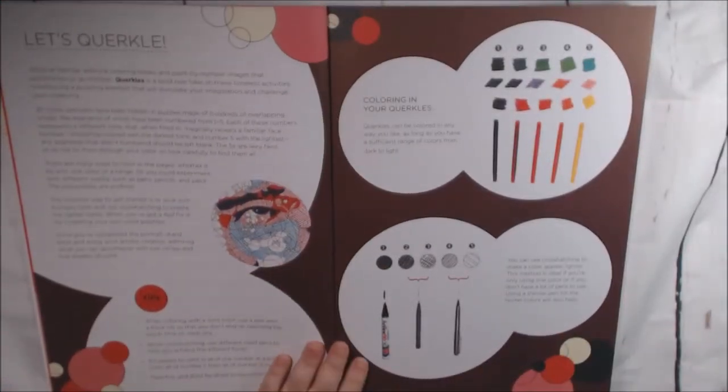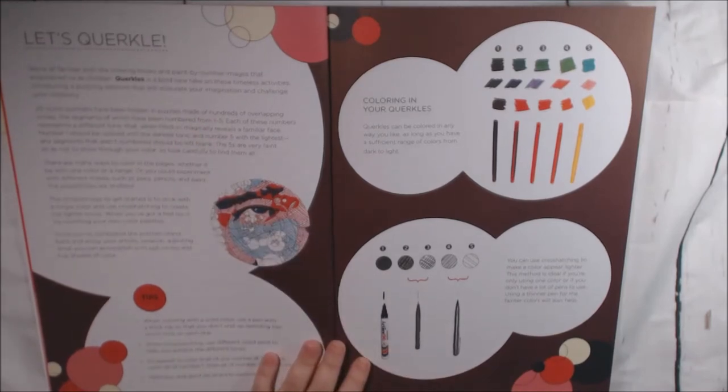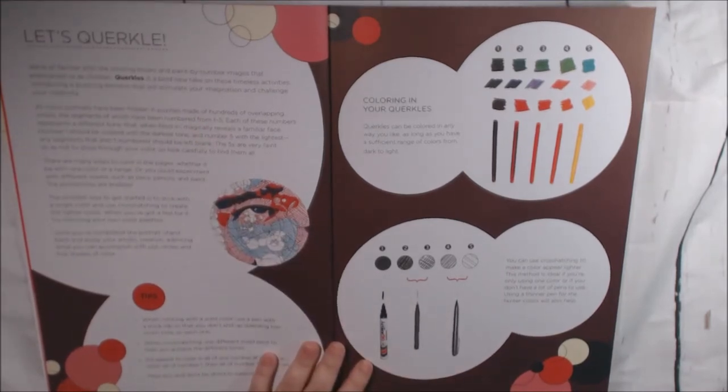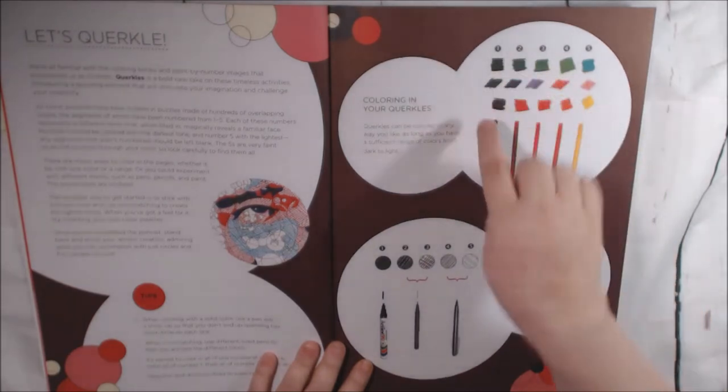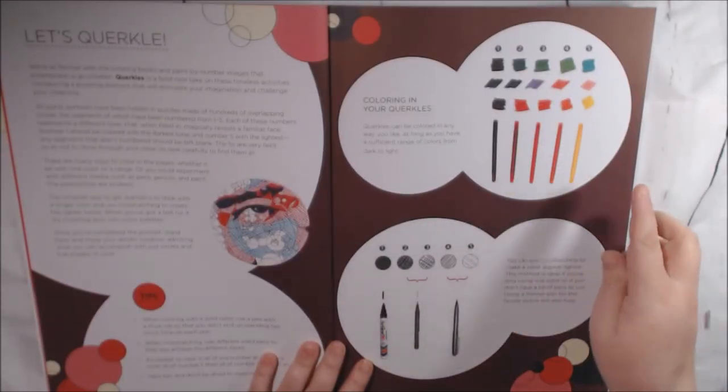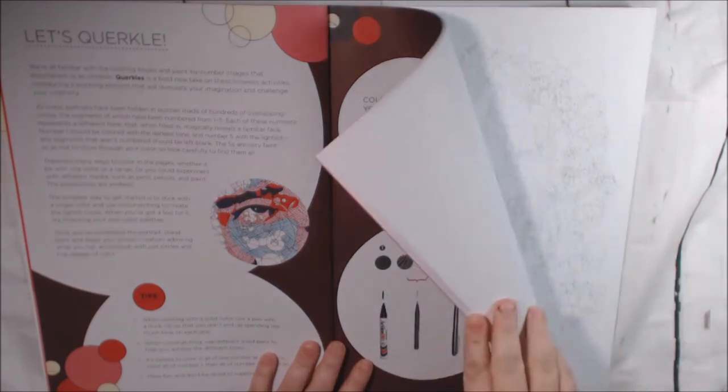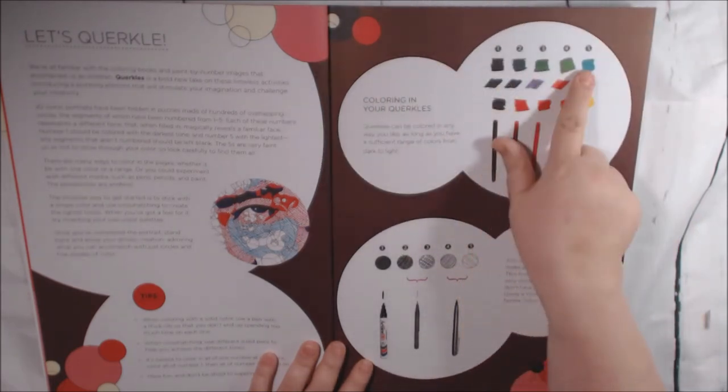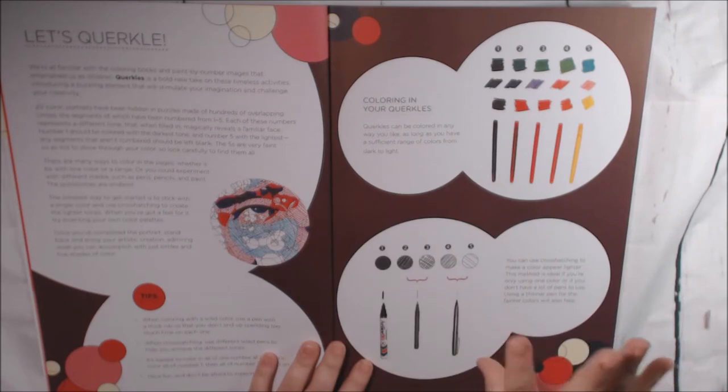But what happens is you get to this page where it says let's Querkle and it tells you what you need to do. Basically, you can either do it in color. You pick five colors from dark to light. And all of the pages are numbered from one to five. All the different pieces and parts. One to five.